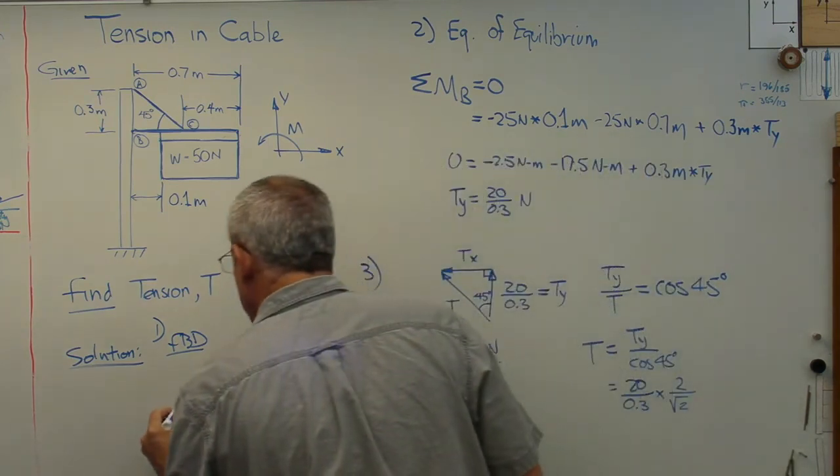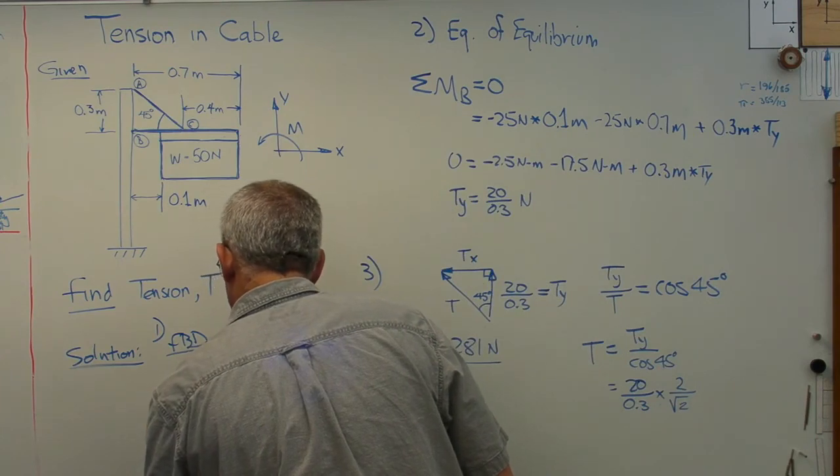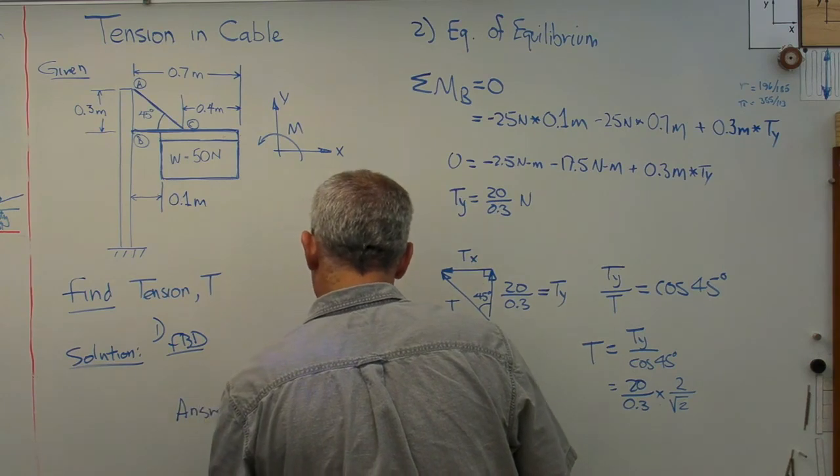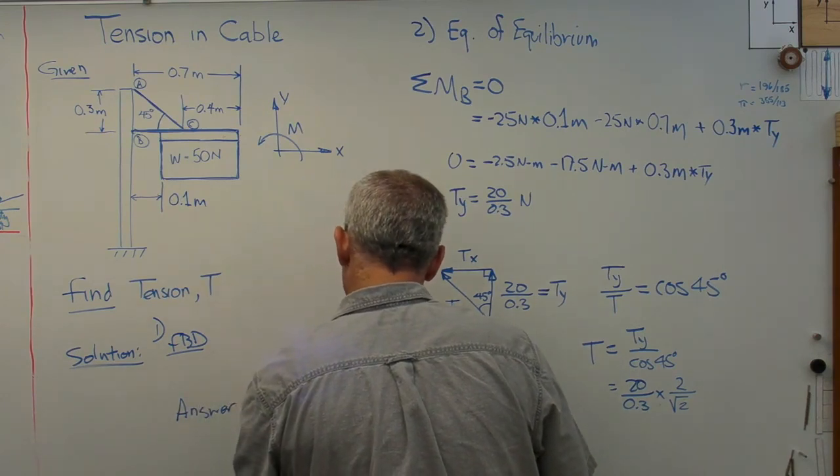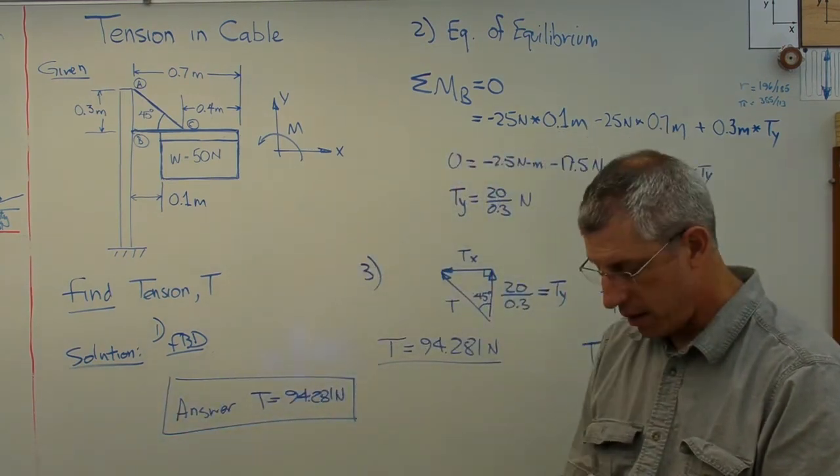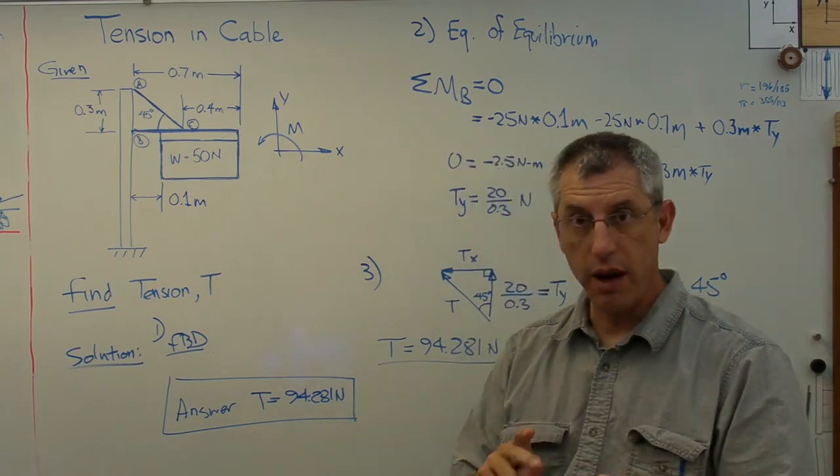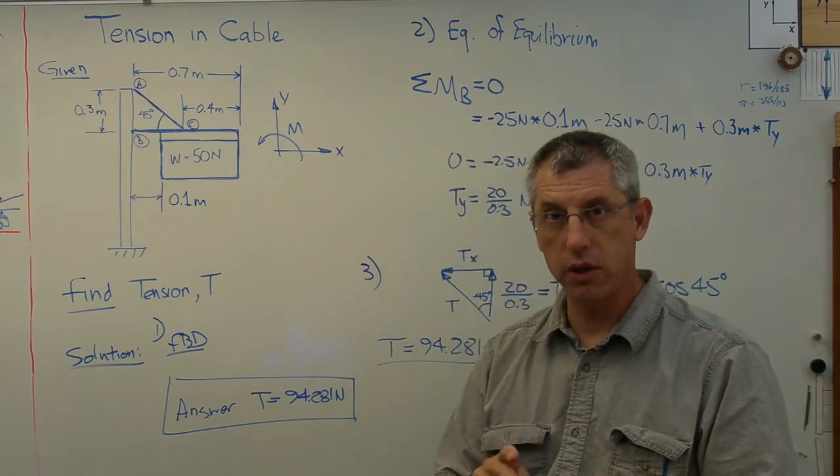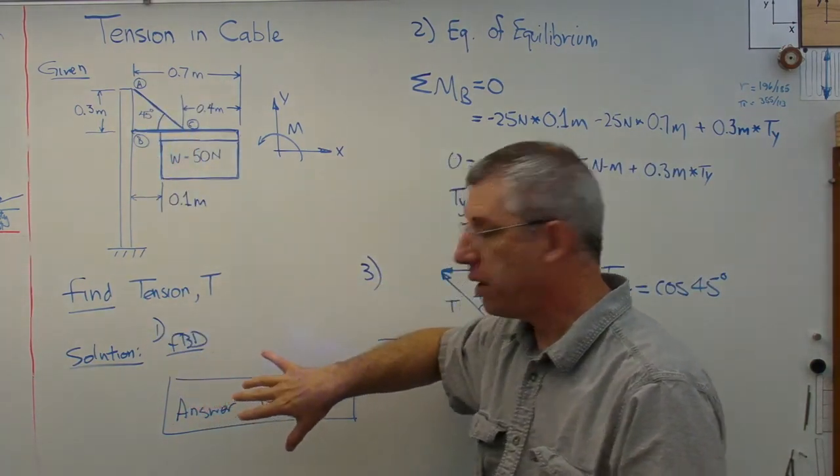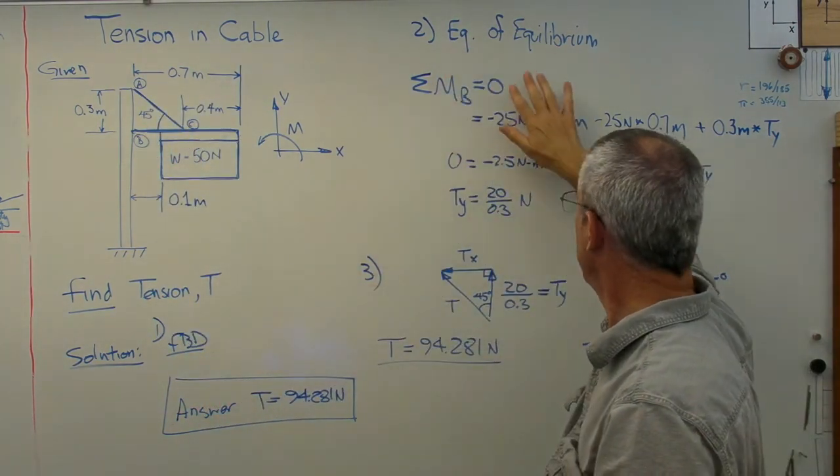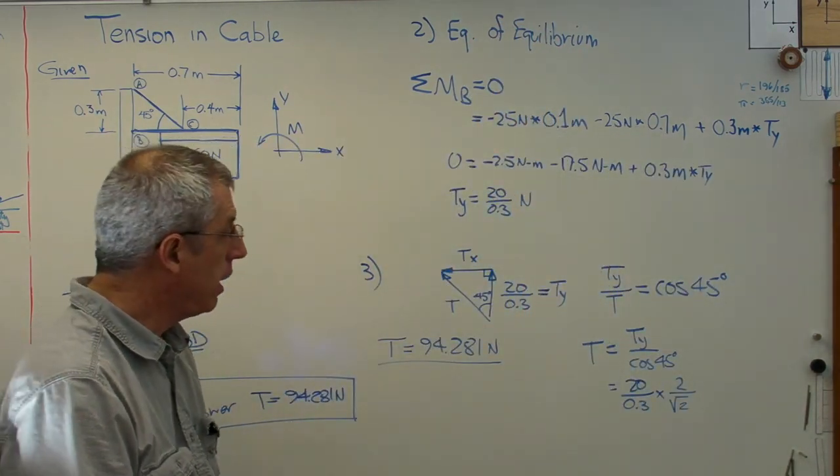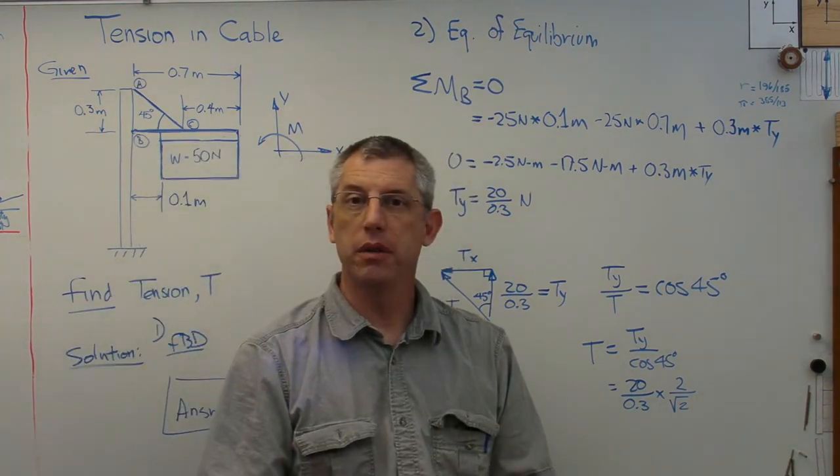So the last thing I'm going to do is write answer. 94.281 Newtons. Put a box around that, and I'm done. So, let's think about what we've done. We've gone through GFSA format, given and find solution, answer. Let's see, we started with our given, drew that, decided to find tension, did a free body diagram, equations of equilibrium, and solved the force triangle to find tension. All right. Hope that helps, and I'll see you next time.